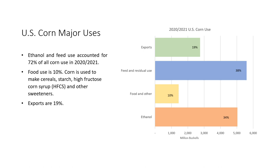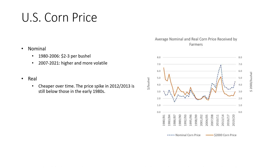Corn is primarily used as livestock feed and to make ethanol. Ethanol and feed use accounted for 72 percent of all corn use in 2020-21. Only 10 percent of corn is used in food — to make cereals, starch, high fructose corn syrup, and other sweeteners. Exports account for 19 percent.